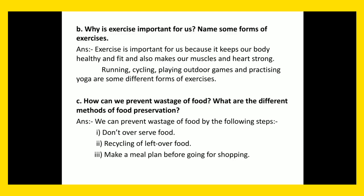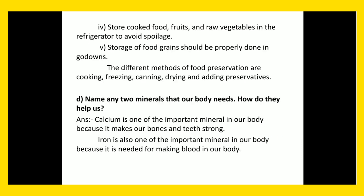Number 6: How can we prevent waste of food? What are the different methods of food preservation? Answer: We can prevent waste of food by the following steps. Number 1: Don't over serve food. Number 2: Recycling of leftover food. Number 3: Make a meal plan before going for shopping. Number 4: Store cooked food, fruits and raw vegetables in the refrigerator to avoid spoilage. Number 5: Storage of food grains should be properly done in go-downs.